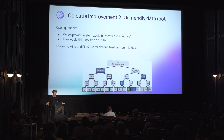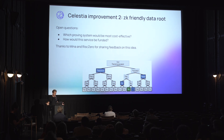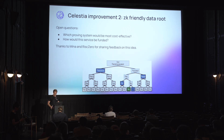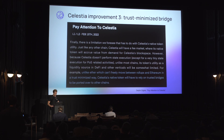Open questions include which proving system would be most cost-effective, since doing SHA-256 in a ZK circuit is really expensive — building these data roots will be very costly. Also, how will this be funded? How do you share this cost among all the different ZK rollups that might use this service? There are some really interesting ideas around proving networks and proving services that could help there. Shout out to Mina and Risc Zero for sharing feedback on this idea.